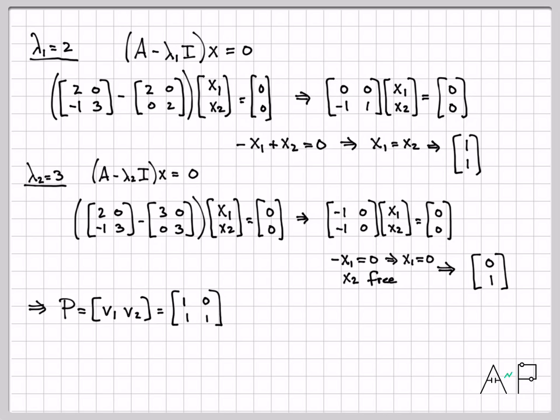So I now know my eigenvectors, and I can construct the matrix P. So this is my matrix P right here. Each column is an eigenvector. Let's go ahead and compute P inverse too. We'll need that here in a minute. Doing the inverse of a 2 by 2 is pretty easy. I have other videos on that. So that is the inverse of P.